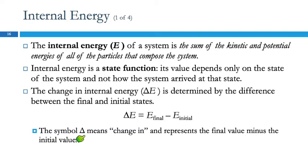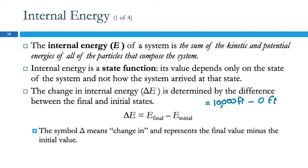The triangle symbol is a capital Greek delta, and in science that means 'change in.' So delta E is the change in internal energy — always the final state minus the initial state. With the elevation analogy: if your final state was 10,000 feet and your initial state was 0 feet, the change in elevation is positive 10,000 feet. If you reversed it — initial minus final — you'd get negative 10,000 feet, suggesting you're going down. So it's always final minus initial. The change in energy equals final energy minus initial energy.